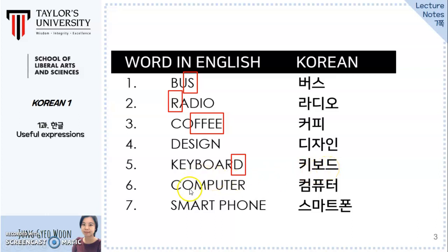Number six: Computer. For borrowing words, the vowels are not matched letter to letter. So the Korean word uses two O sounds — one for 'com' and the other for 'ta' — unlike the English vowels O and E. Computer.